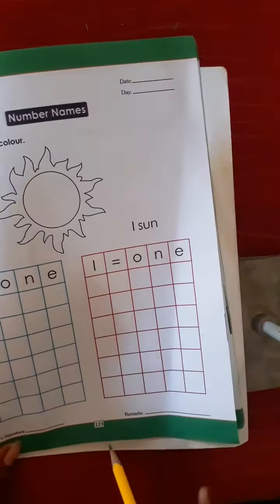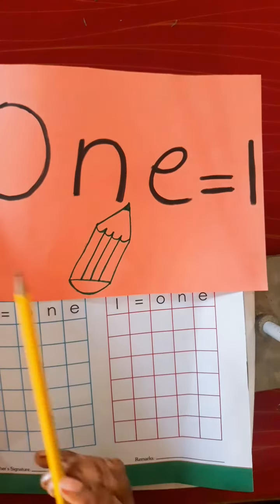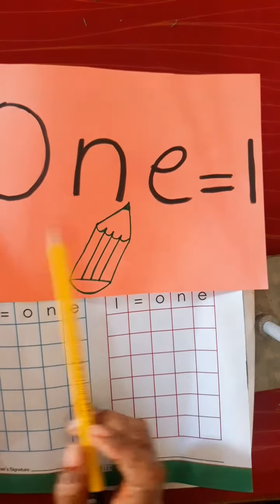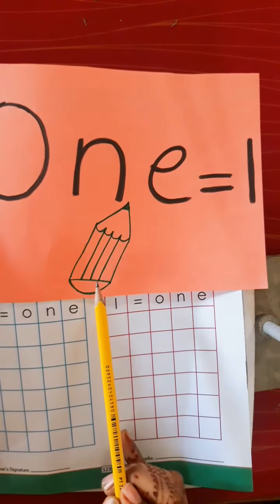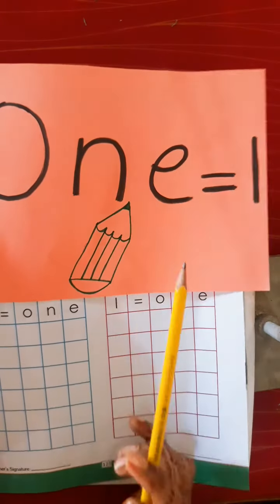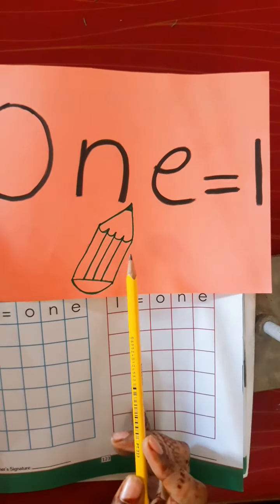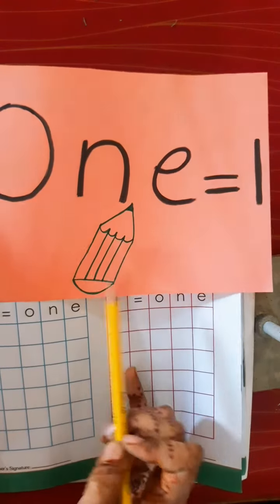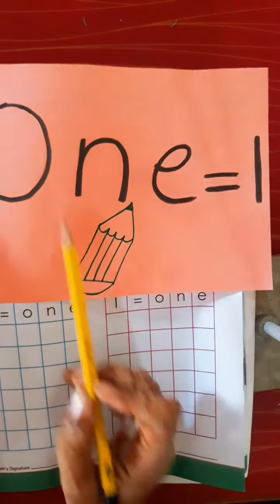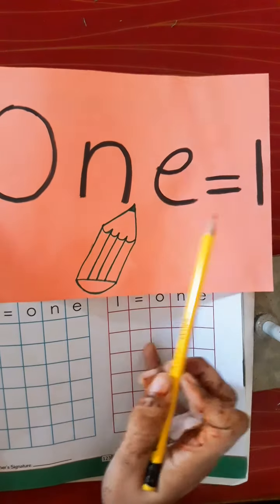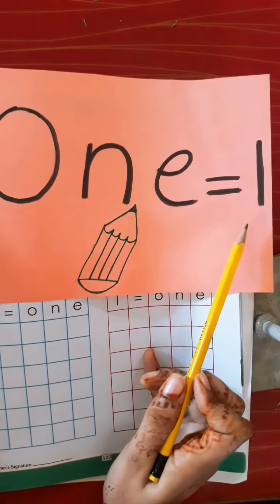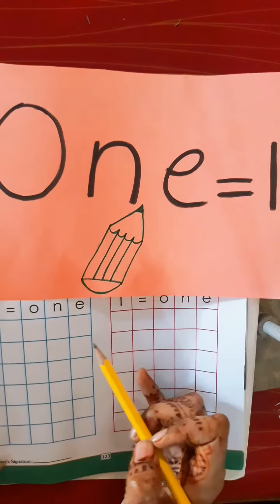Now students, come to book page number 123. We will identify and write the spelling of one. Look here — how many pencils? One pencil. The spelling of one is O-N-E. Now we write here the spelling of one: O-N-E.